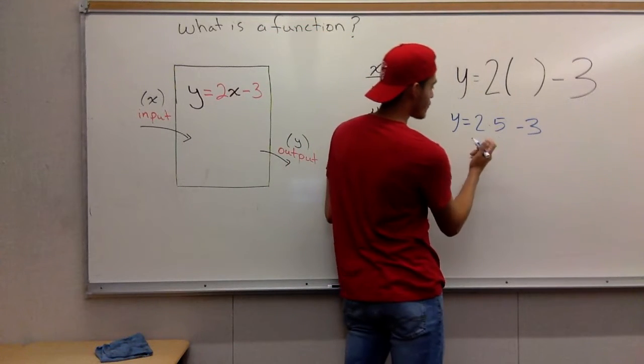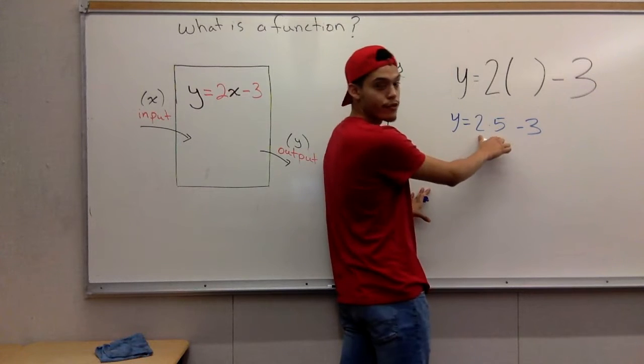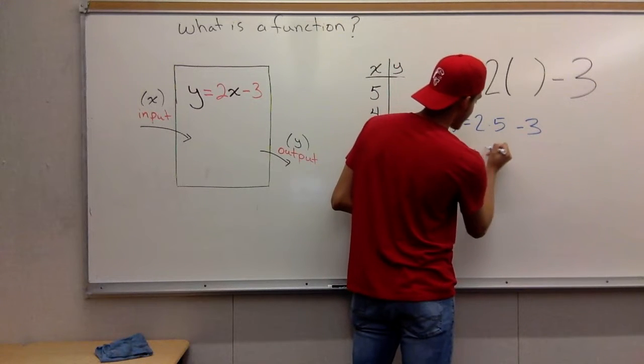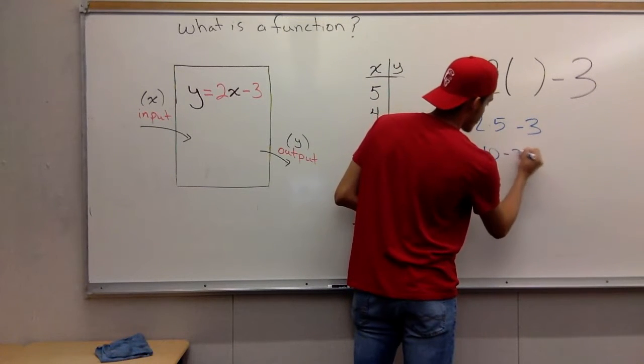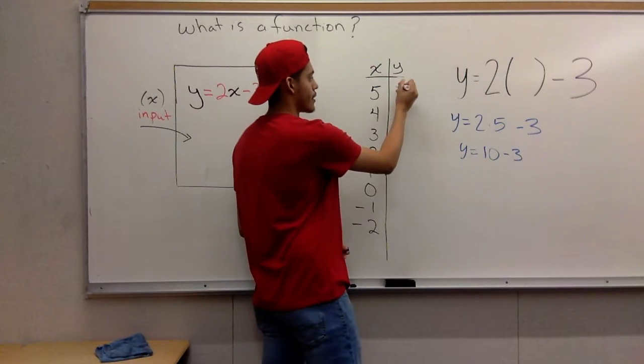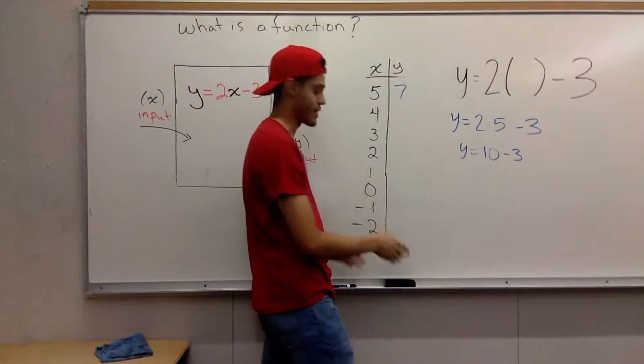Okay. Y equals 2 times 5, because you always do multiplication first. Y equals 2 times 5, that is 10. And you have 10 minus 3. You're going to get 7. And that's basically how you do it.